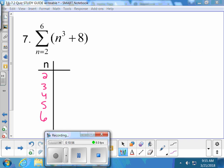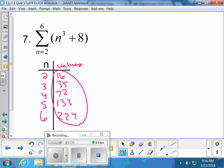I told the students to try this one all by themselves. You make your chart from 2 to 6. Your values are 16, 35, 72, 133, and 224. Those are the ones that you add up together, so you get your final answer of 480.